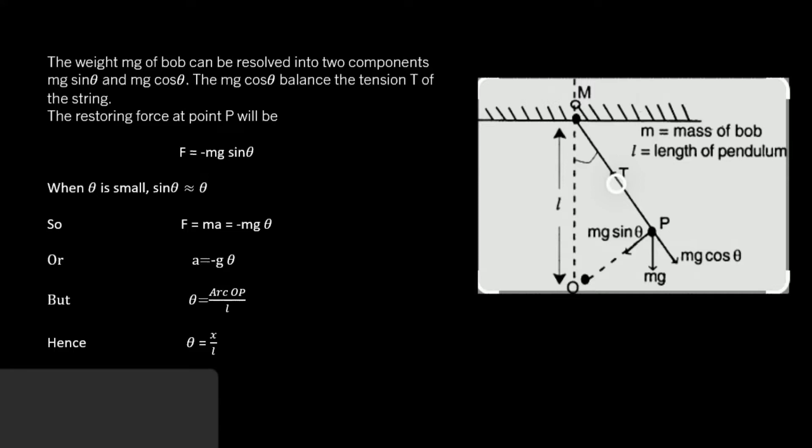According to Newton's second law, a equals minus g theta. According to the diagram, theta equals arc OP by L. Hence, theta equals x by L.